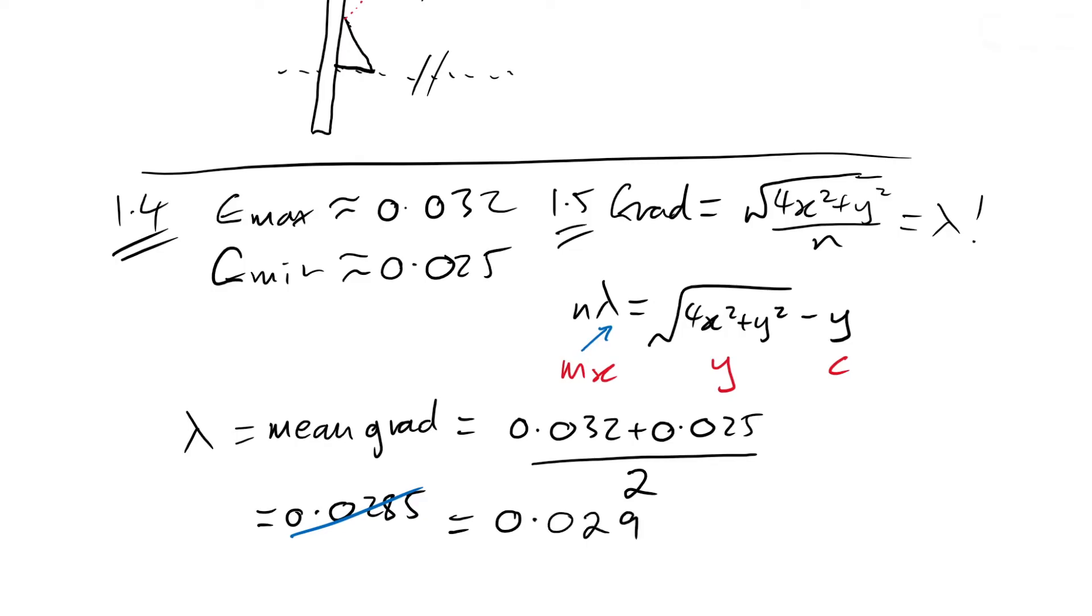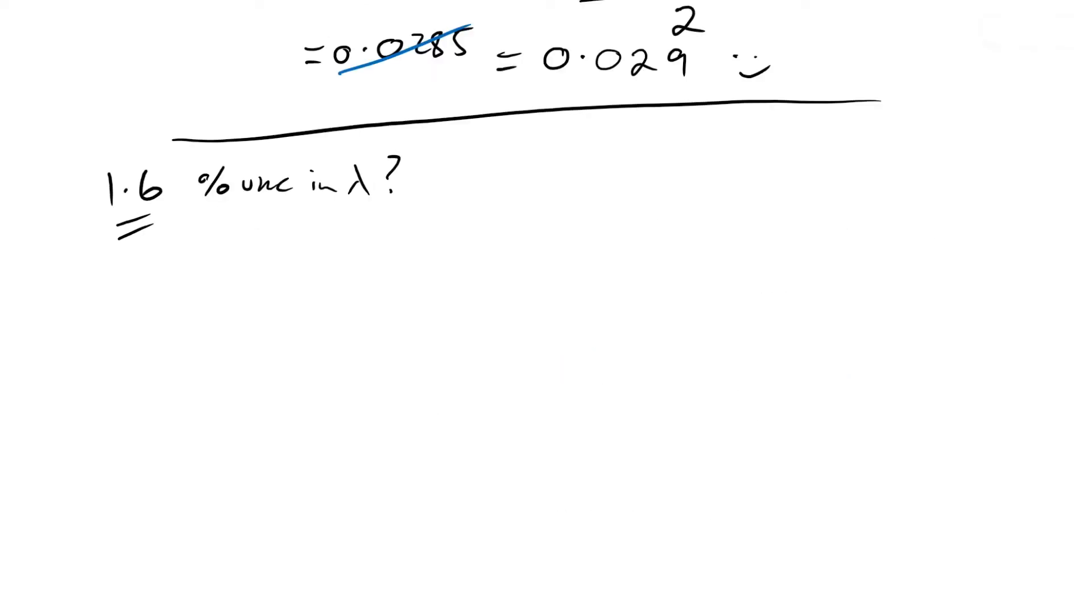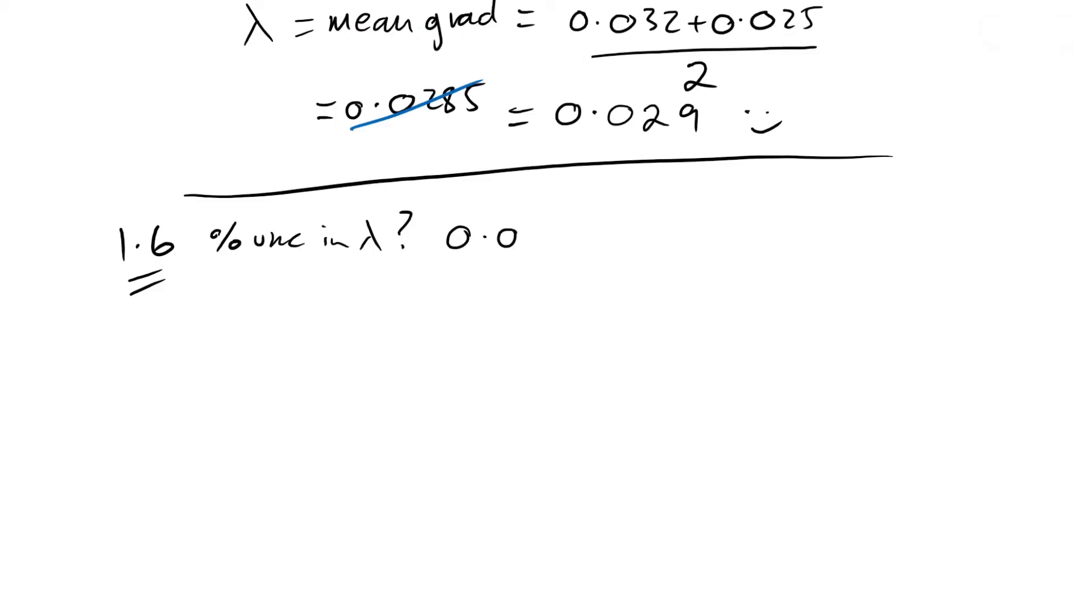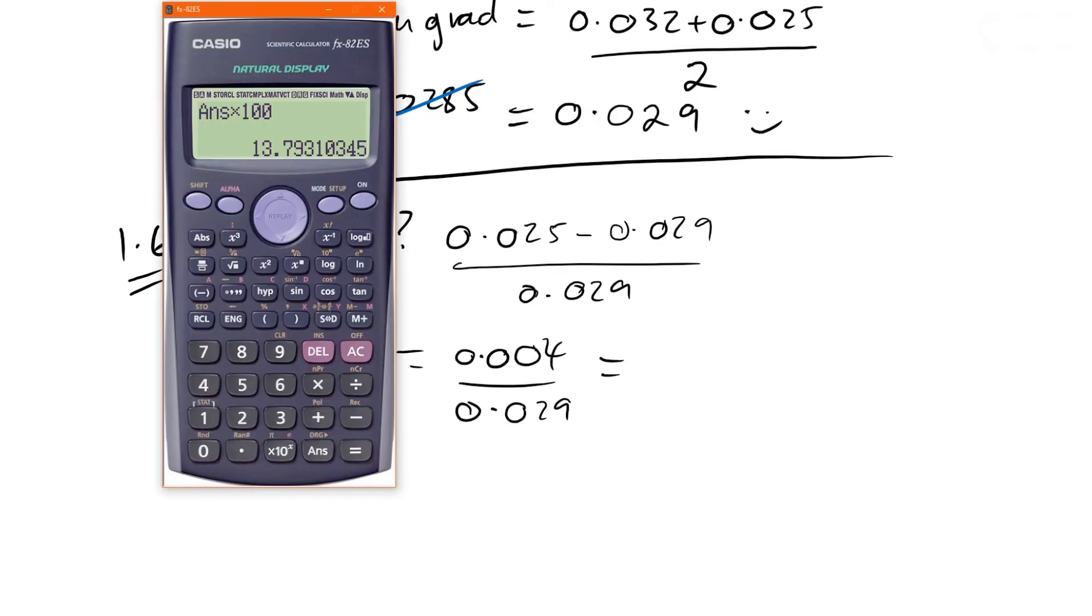Percentage uncertainty in lambda: we need to do one of our values take away the mean. Let's go for the worst case scenario, shall we? So let's use 0.025 take away 0.029, doesn't matter which way around we do it, and divide that by our average. That's going to be 0.004 divided by 0.029, that gives us 13.8.